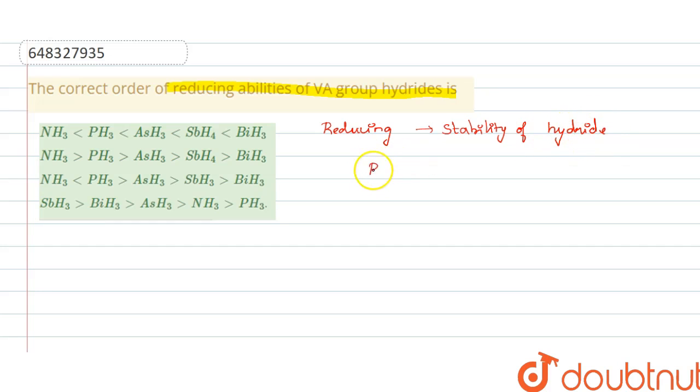The reducing nature will be inversely proportional to the stability. If the reducing nature increases, the stability decreases, or if the stability increases, the reducing nature decreases.